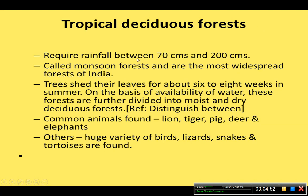Tropical deciduous forest requires rainfall between 70 centimeters to 200 centimeters. It is also called monsoon forest and is the most widespread forest of India, as our country has a monsoon-type climate. Trees shed their leaves for about six to eight weeks in the summer months. On the basis of water availability, these forests are further divided into moist and dry deciduous forests.